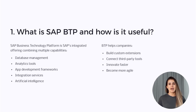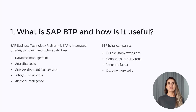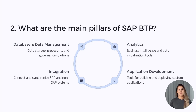SAP BTP, or Business Technology Platform, is SAP's integrated offering that combines database, analytics, app development, integration, and AI. I've used it to build custom extensions on SAP S/4HANA and connect third-party tools seamlessly. It helps companies innovate faster and become more agile.